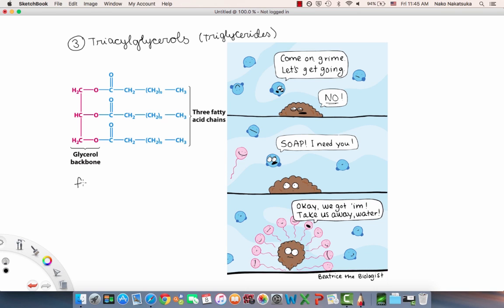Triacylglycerols are fats if they are solid at room temperature. Examples of this are butter, lard, and human fat. But they're in the form of oils if they're liquid at room temperature. Examples of this are coconut oil, olive oil, peanut oil, etc. Their main biological function is energy storage.